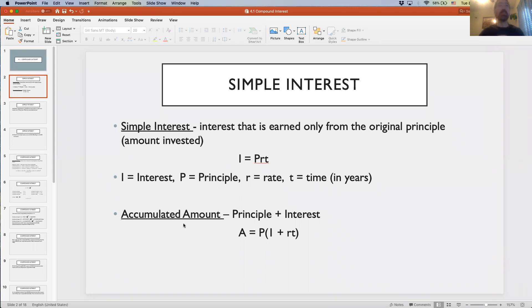Another important formula that we'll see in this section is the accumulated amount for simple interest. Accumulated amount is simply the principal plus the interest - how much you invest in the savings account plus how much the bank pays you for leaving your money in the savings account. This formula is A equals P times one plus RT.